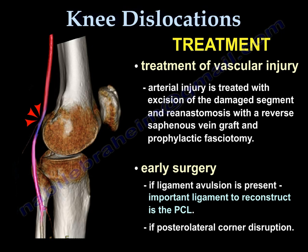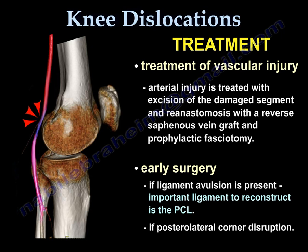Treatment of vascular injury — arterial injury: Arterial injury is usually treated with excision of the damaged segment and re-anastomosis with a reverse saphenous vein graft, in addition to prophylactic fasciotomy.